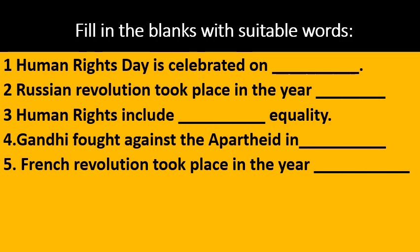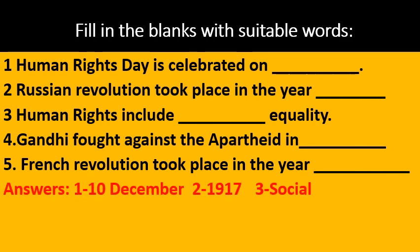Now it is time to know the answers. Human Rights Day is celebrated on 10th December. Russian Revolution took place in the year 1917. Human Rights include social equality. Gandhi fought against the Apartheid in South Africa. French Revolution took place in the year 1789.